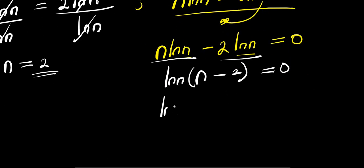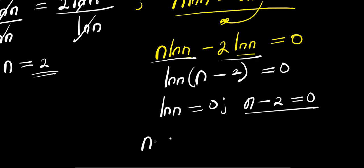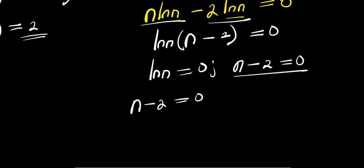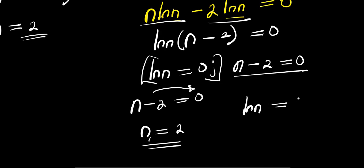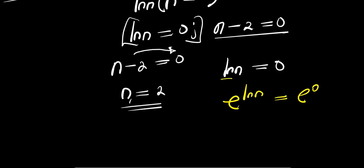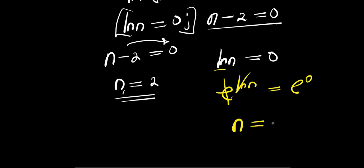From the factored form, we get two equations: ln(n) equals 0, and n minus 2 equals 0. From n minus 2 equals 0, we get n equals 2 as the first solution. For ln(n) equals 0, we eliminate the natural log by writing e to the power ln(n) equals e to the power 0, giving n equals 1. So we have two solutions: n equals 2 and n equals 1.